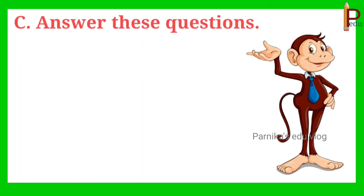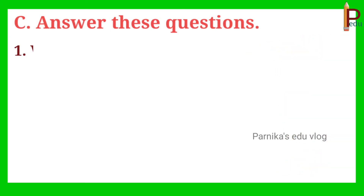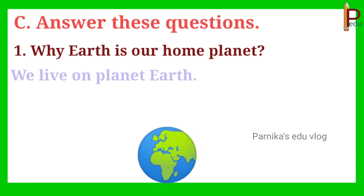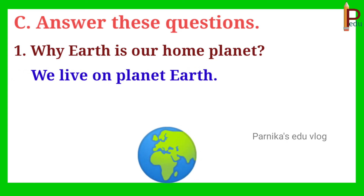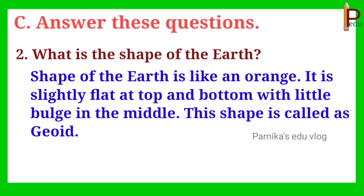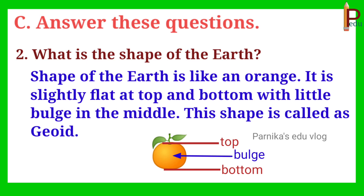Children, let's see the question and answers. First one: why is earth our home planet? Answer: because we live on planet earth. Second one: what is the shape of the earth? Answer: the shape of the earth is like an orange. It is slightly flat at the top and bottom with a little bulge in the middle.